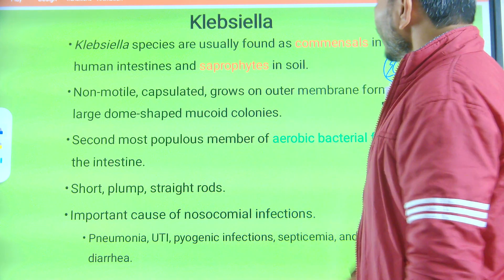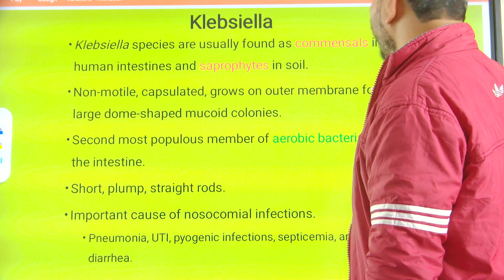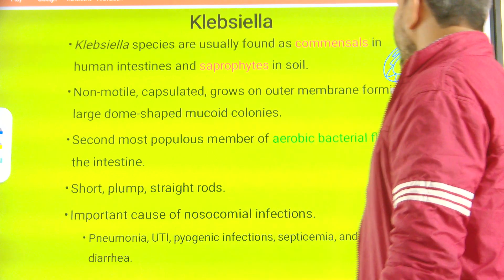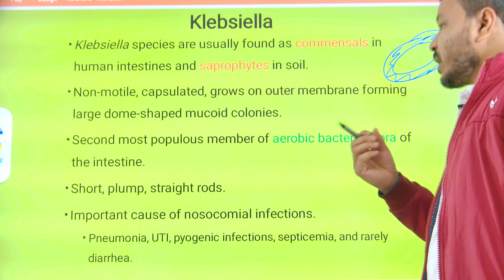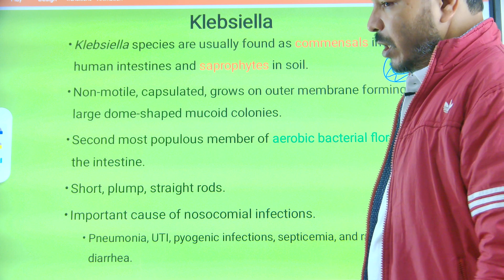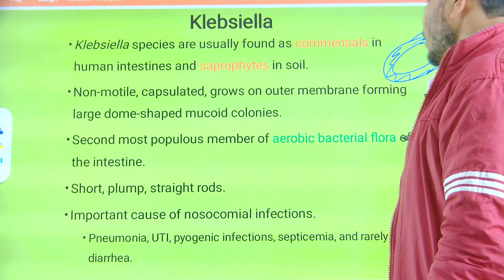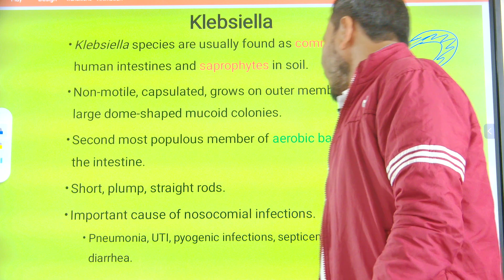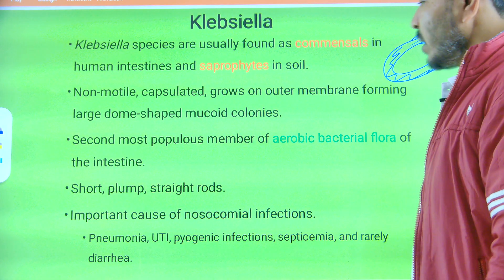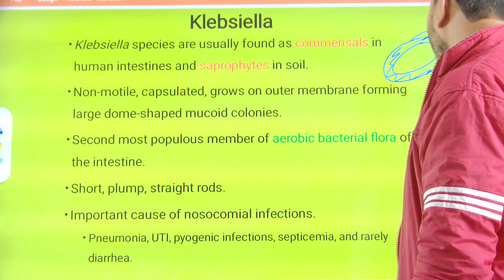The thick mucus capsule grows on the outer membrane forming large dome-shaped mucoid colonies. It helps in adherence and prevents phagocytosis. Klebsiella is the second most populous member of aerobic bacteria flora of the intestine. They are short, plump, and straight rods.